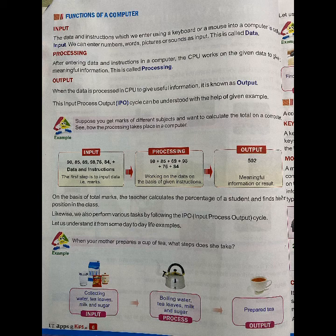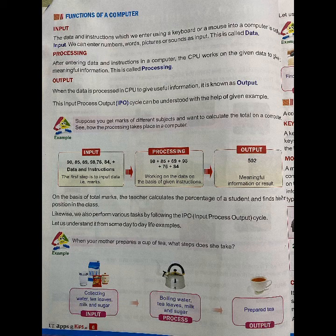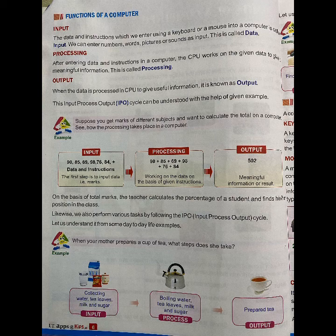Functions of a computer: Input — the data and instructions which we enter using a keyboard or a mouse into a computer is called input. We can enter numbers, words, pictures, or sounds as input, and this is called data. Processing — after entering data and instructions, the CPU works on the given data to give meaningful information, and this is called processing.